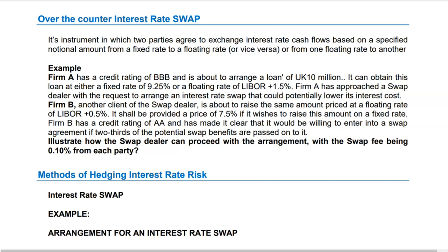Firm A has approached a swap dealer with a request to arrange an interest rate swap that could potentially lower its interest cost. Firm B, another client of the swap dealer, is about to raise the same amount at a floating rate of LIBOR plus 0.5%, or at a fixed rate of 7.5%.